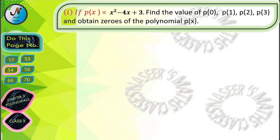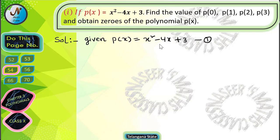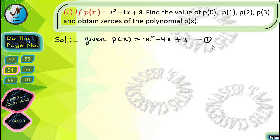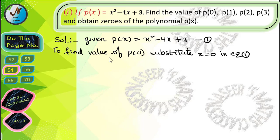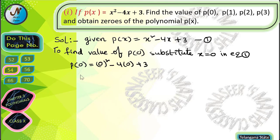First we write the given polynomial: p(x) = x² - 4x + 3. Let this be equation 1. Next, to find the value of p(0), substitute x = 0 in equation 1. After substitution of x = 0 in p(x), we get p(0).